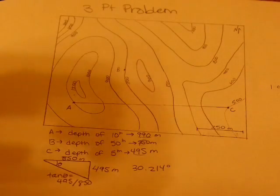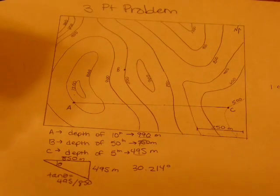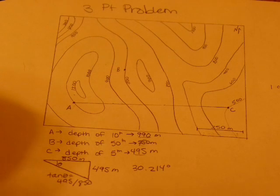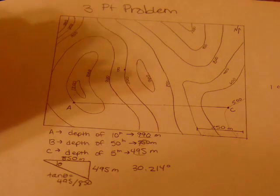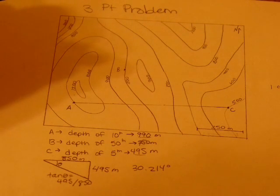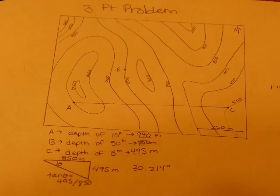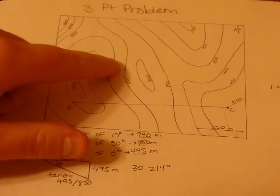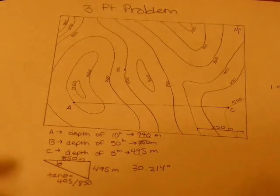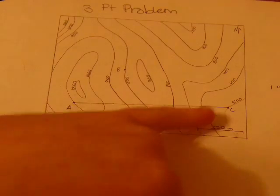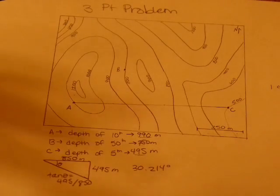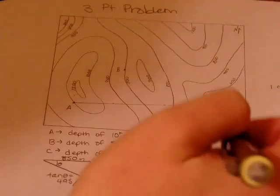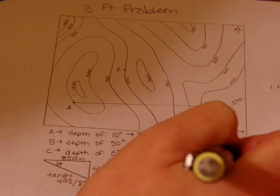But again, we're looking for a true depth. So next, we need to figure out where B, if B is an elevation of 750 meters, where would 750 meters be on this line? Okay, so to do that, let's draw another triangle.